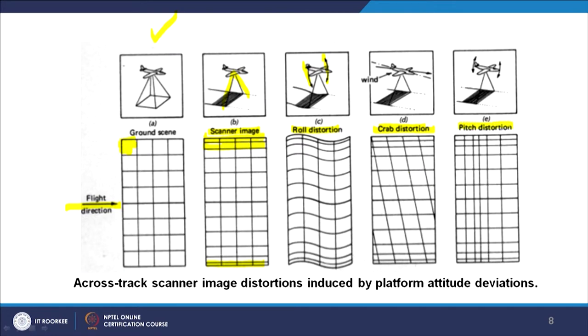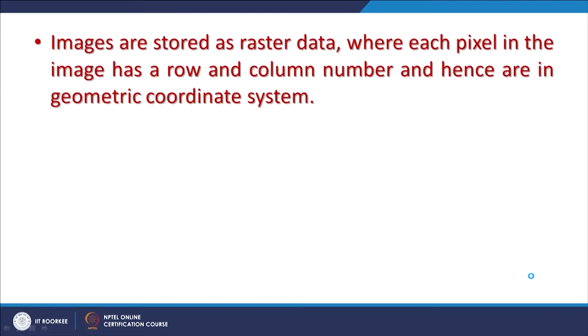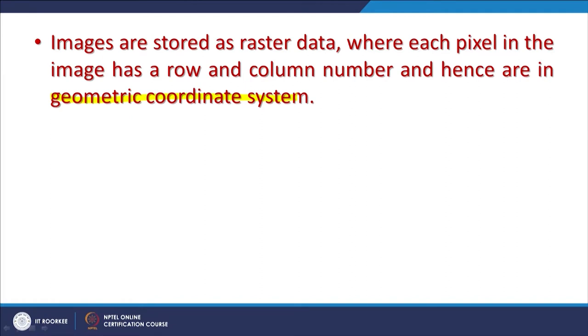Cross-track scanner distortions introduced by altitude variations will bring a lot of geometric errors in our images. As you know, in raster each pixel has a row and column number, and the origin of an image is always from the top left corner — so we start addressing from first row, first column. But this is in geometric coordinate system. In geographic coordinate system, we always start from the bottom left. This is another adjustment we have to make during georeferencing.